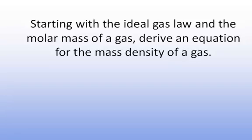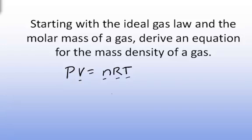A good exercise to check your understanding of gases and the concept of density is to think about the relationship between the number density and the mass density of a gas. Starting with the ideal gas law and the molar mass of a gas, you can derive an equation for the mass density of a gas. The ideal gas law is PV equals nRT, where P is the pressure, V is the volume the gas occupies, N is the number of moles present, R is the universal gas constant, and T is the absolute temperature of the gas.